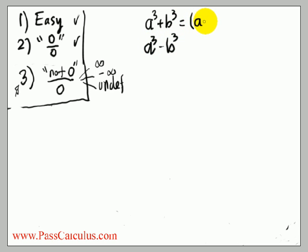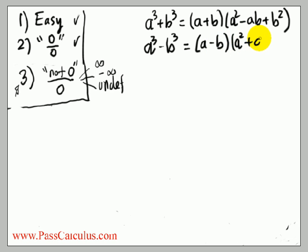a cubed plus b cubed is a plus b times a squared minus ab plus b squared. These are just some formulas from algebra which you kind of need to know. And a cubed minus b cubed is a minus b times a squared plus ab plus b squared.